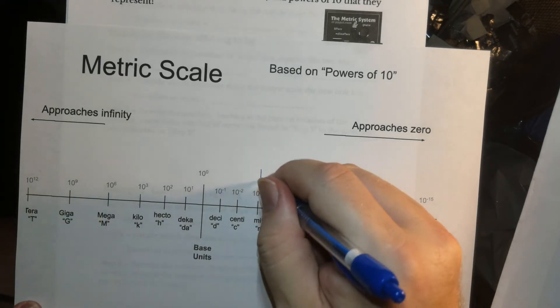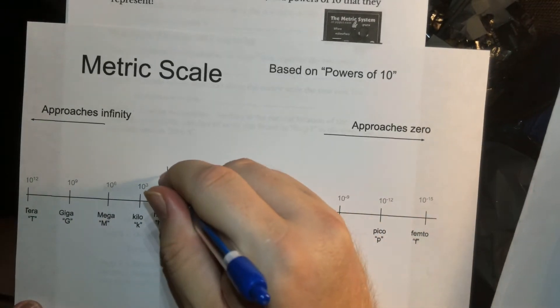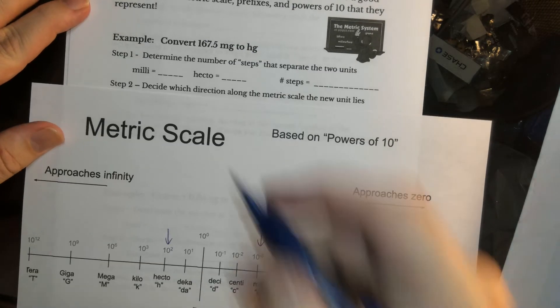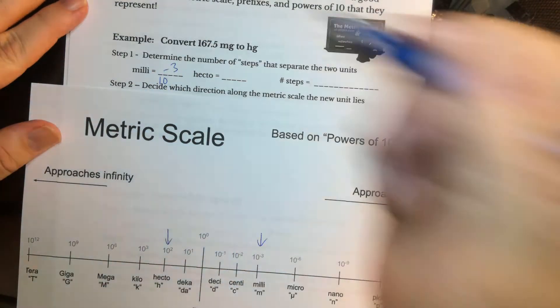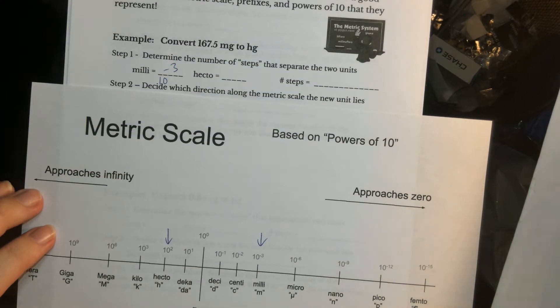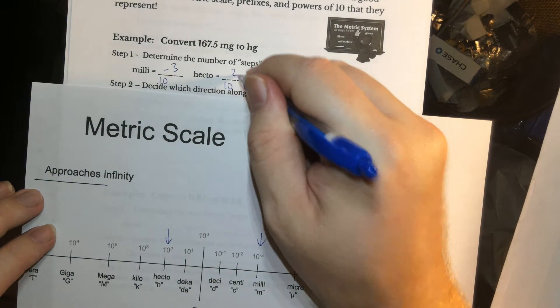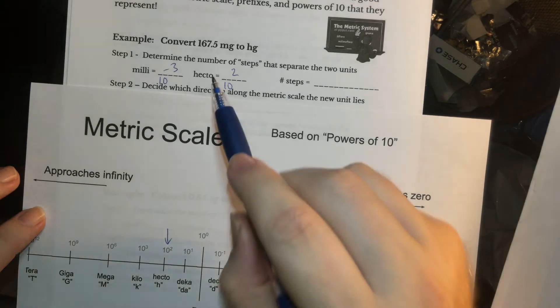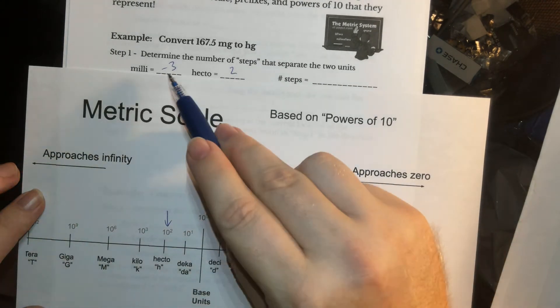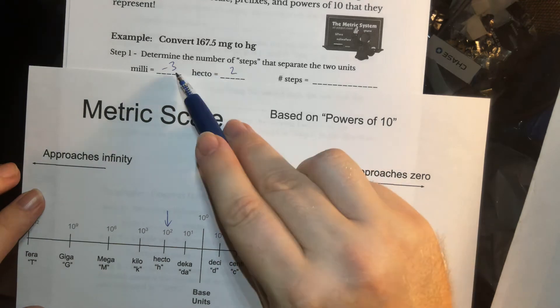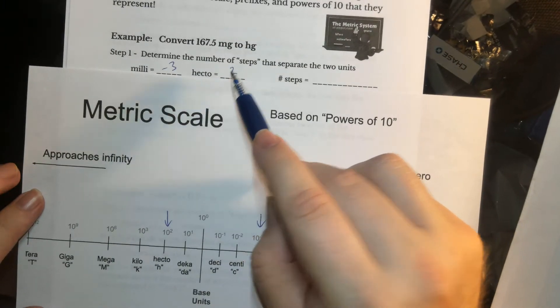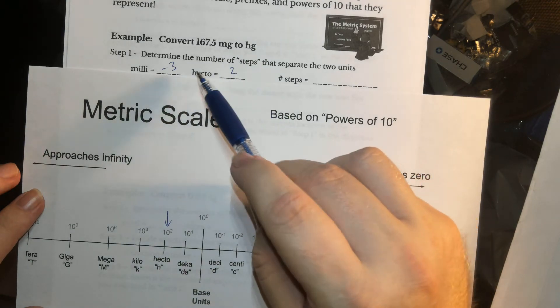So remember, we are in milli, and I'm going to hecto. So from the number line there, you can see that's 10 to the minus 3, so for milli, it's really that minus 3 that we're interested in, and then hecto is 10 to the second. So the exponents are really what we're going to use to find the steps. So now we can just ignore the tens, go back to an elementary problem where your teacher asked you how many places or how many steps separate these two points on the number line, and you learn to just subtract the 2.